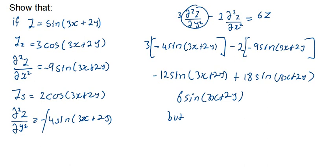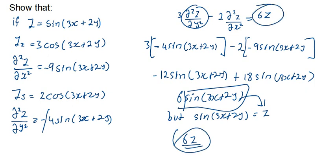But sine of 3X plus 2Y is simply equal to Z. So I can replace this with Z, and we get 6Z, which is what we were looking for. That's how straightforward it is. We didn't even have to go up to 6 minutes. Thank you very much for watching.